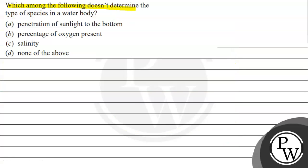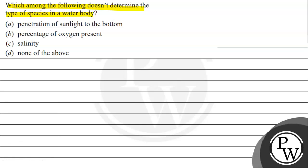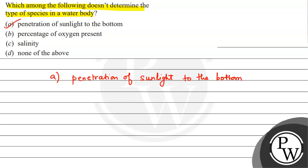Now, which among the following doesn't determine the type of species in a water body? Option A: Penetration of sunlight to the bottom. Option B: Percentage of oxygen present. Option C: Salinity. Option D: None of the above. According to the text, percentage of oxygen present determines species, and salinity determines species, but penetration of sunlight to the bottom does not — so the answer is Option A. I hope you understood it. Best of luck.